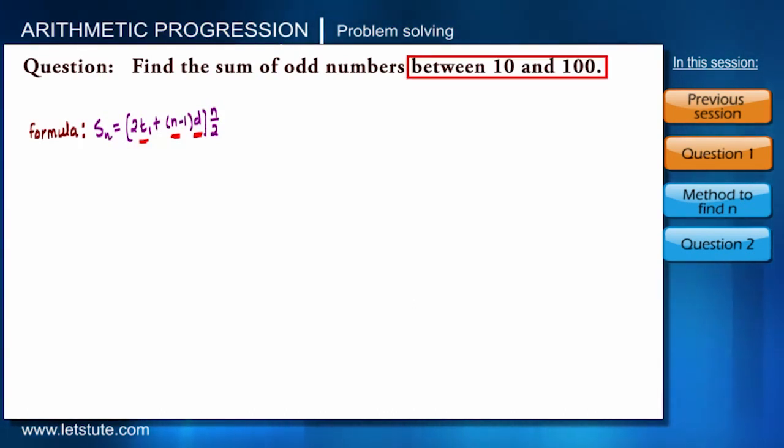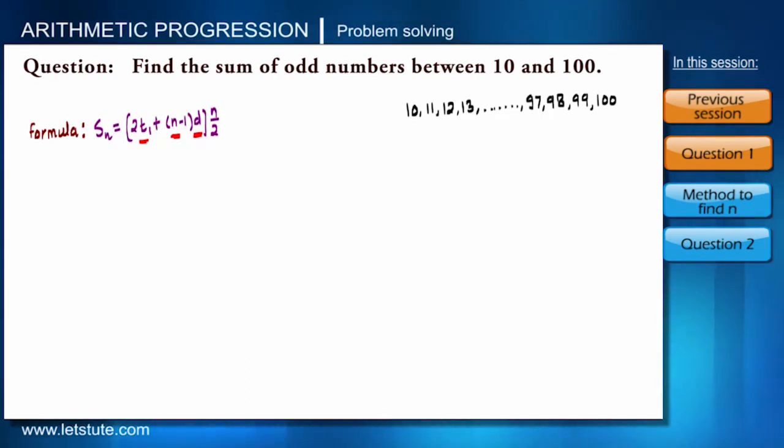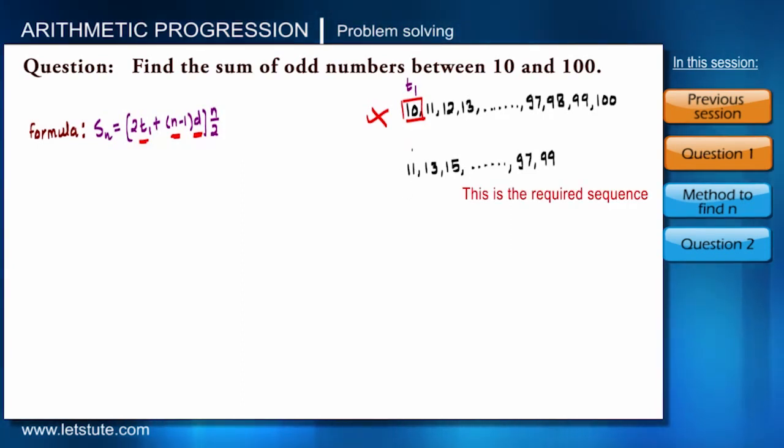Getting these parameters will be very easy if we list the given range of numbers. It will start with 10, 11, 12, 13, and so on to 97, 98, 99, and 100. So now what is T1? We have to pick the odd numbers only. The numbers will be 11, 13, 15 to 97 and 99. So T1 is 11.